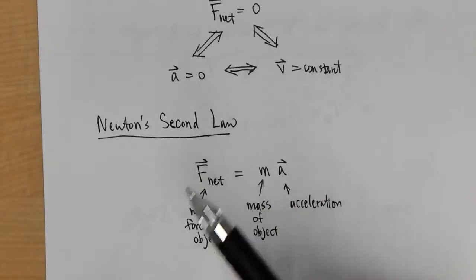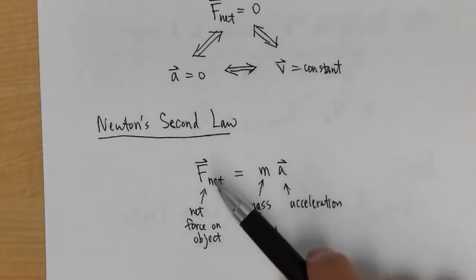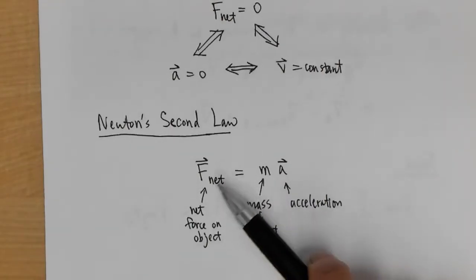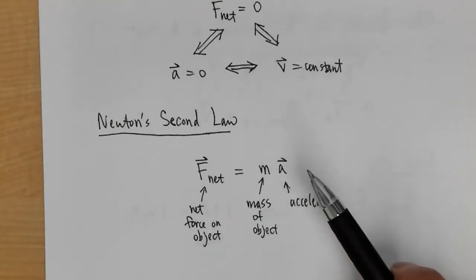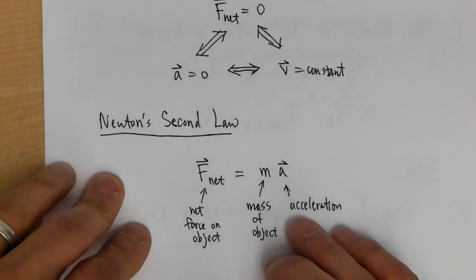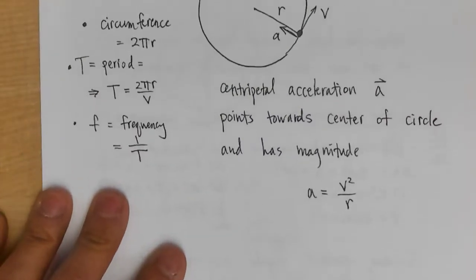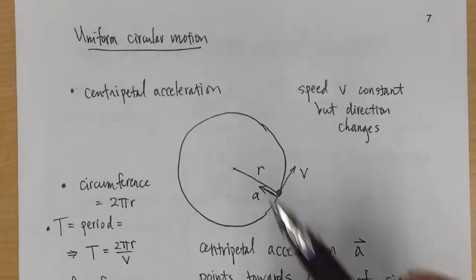Newton's second law is the most important one: F_net equals mass times acceleration.